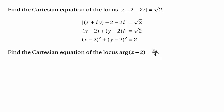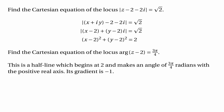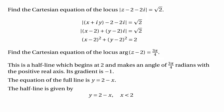We're now asked to find the Cartesian equation of the locus arg(z minus 2) equals 3π over 4. This is a half-line which begins at 2 and makes an angle of 3π/4 radians with the positive real axis, so its gradient is obviously going to be minus 1. The full line would have equation y equals 2 minus x, but we want the half-line where y equals 2 minus x and x is less than 2.